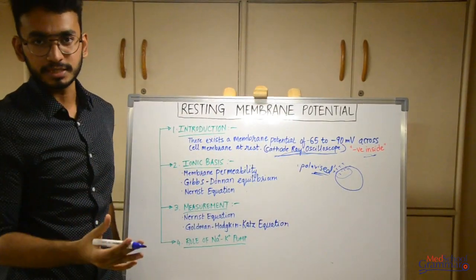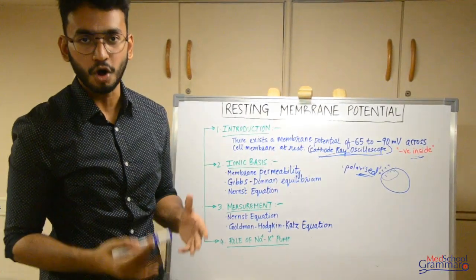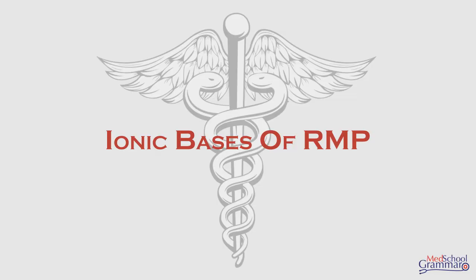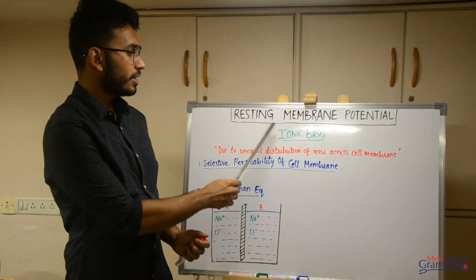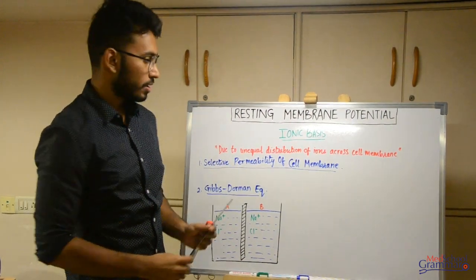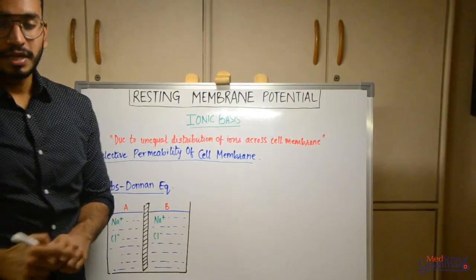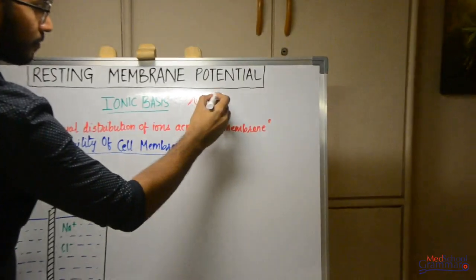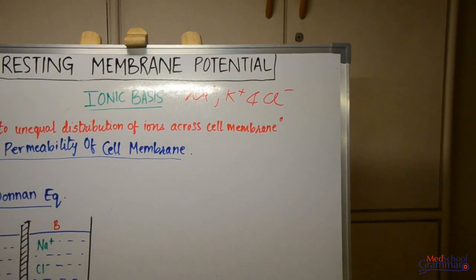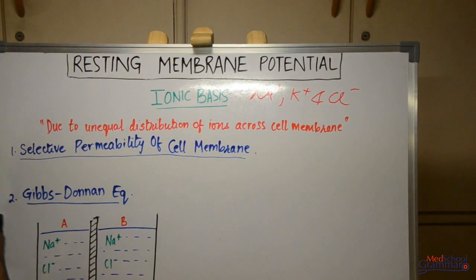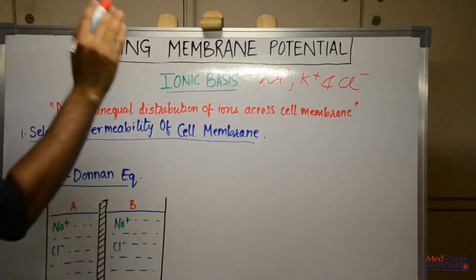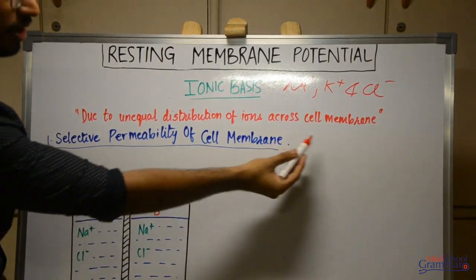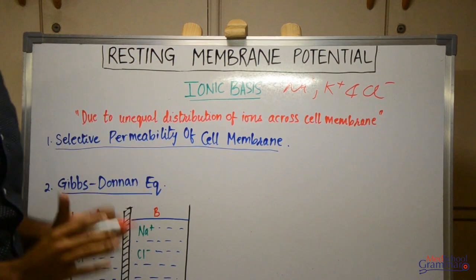Now we'll talk about the ionic basis — in detail, how resting membrane potential is formed and why it is negative on the inside of the cell. There are three important ions that play a role. In one line: resting membrane potential occurs due to unequal distribution of ions across the cell membrane.